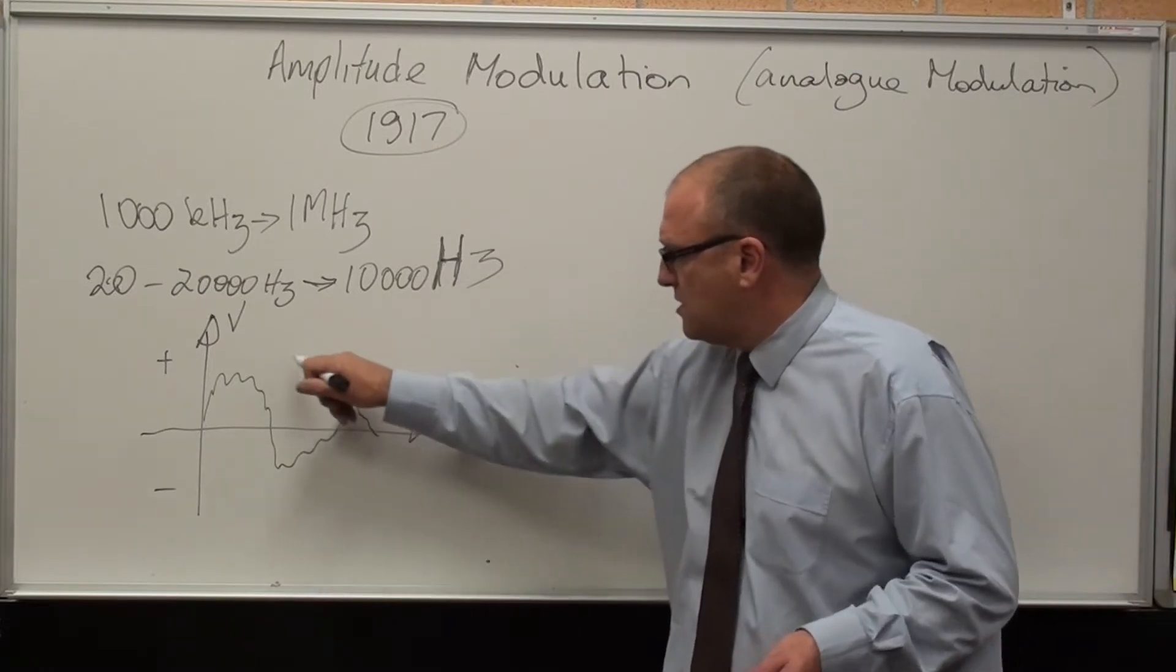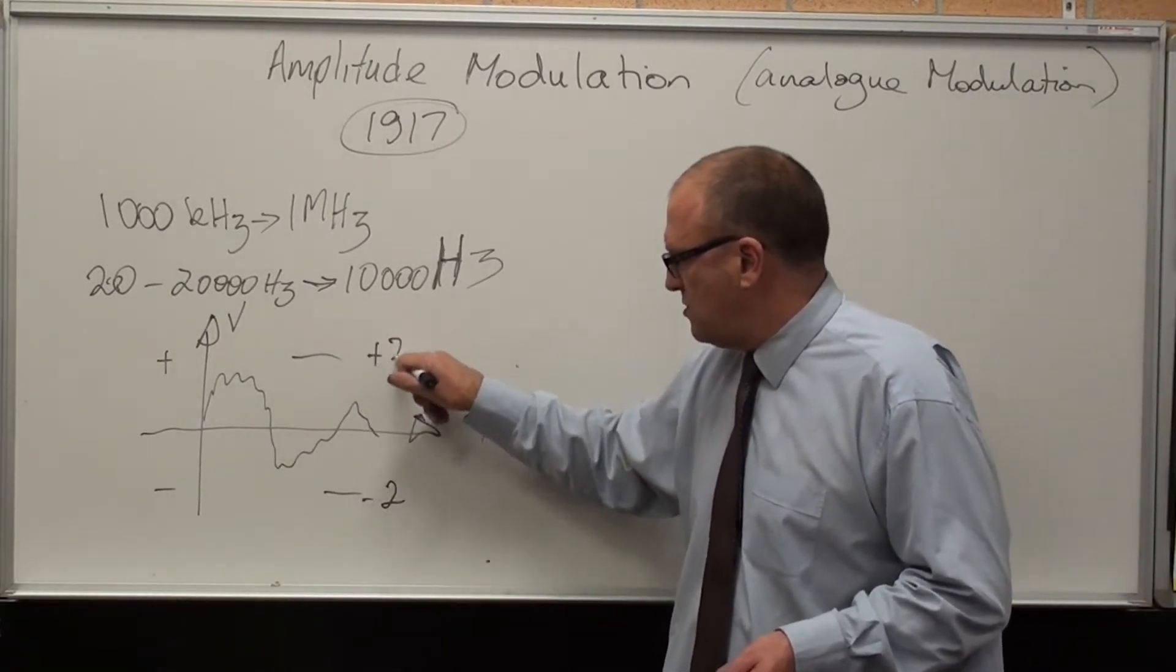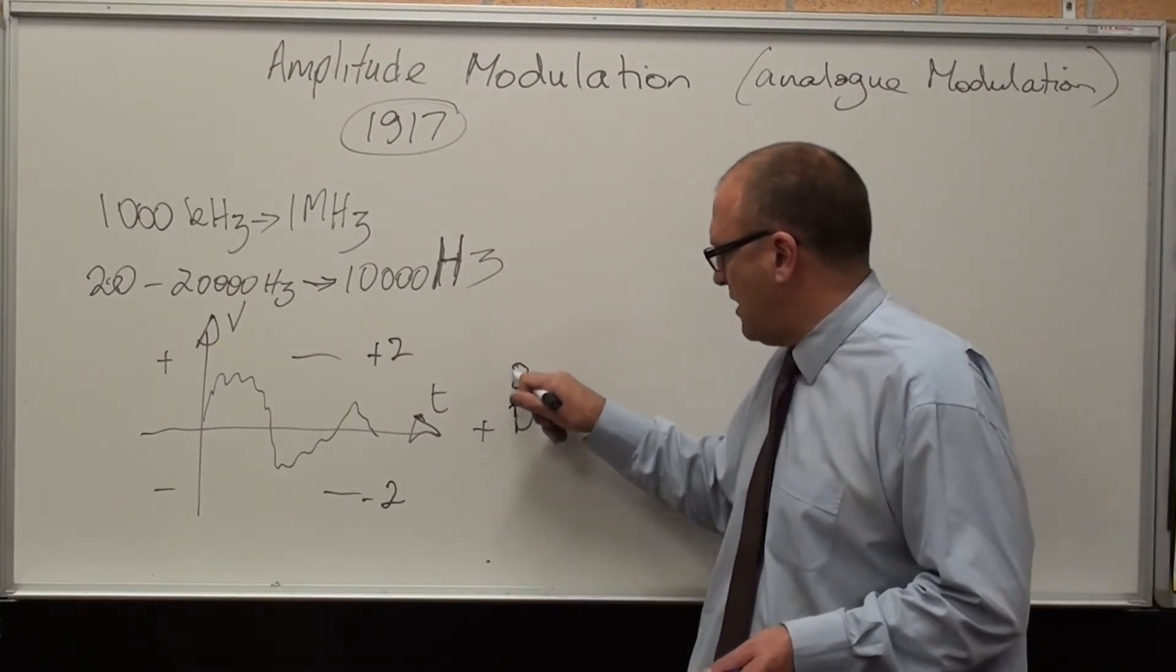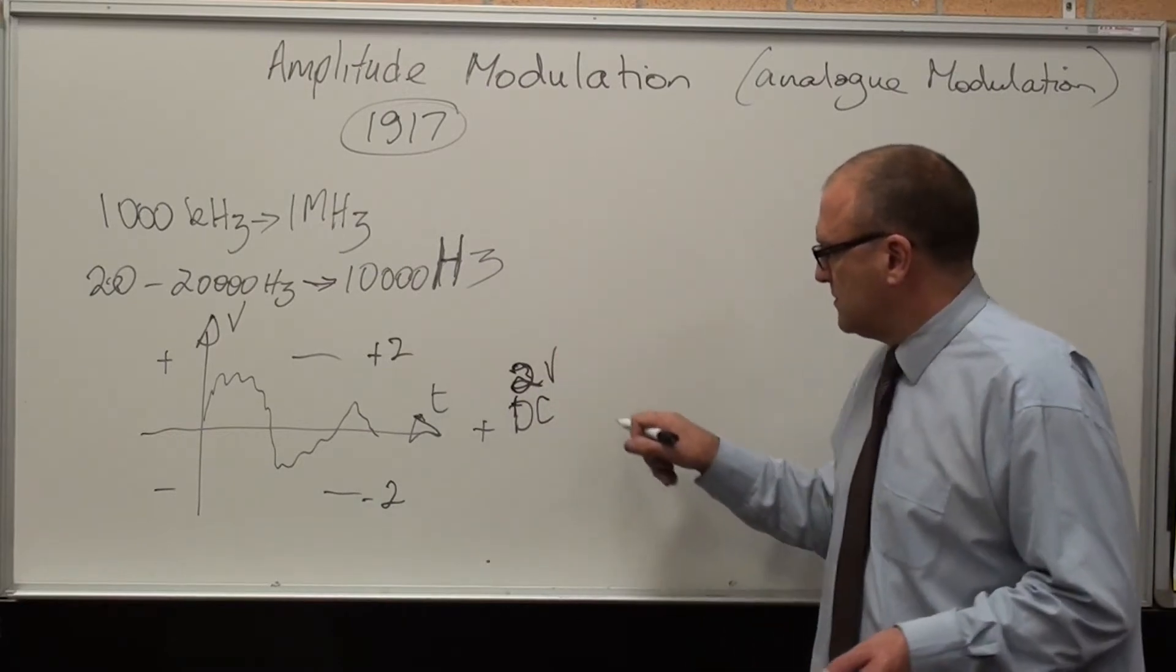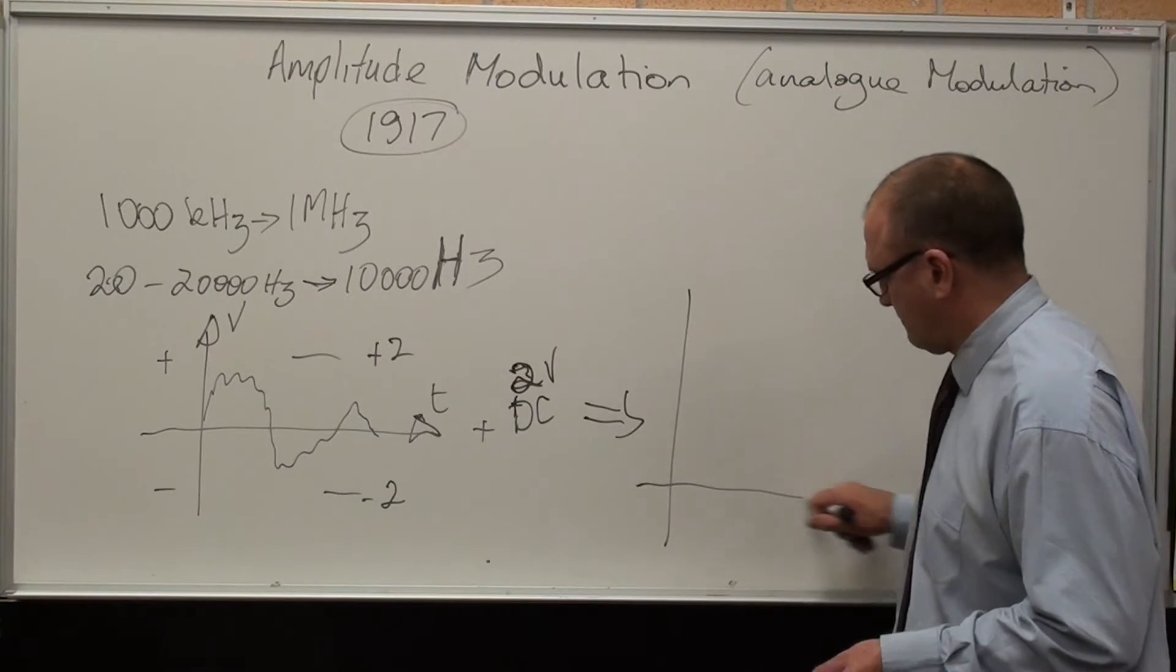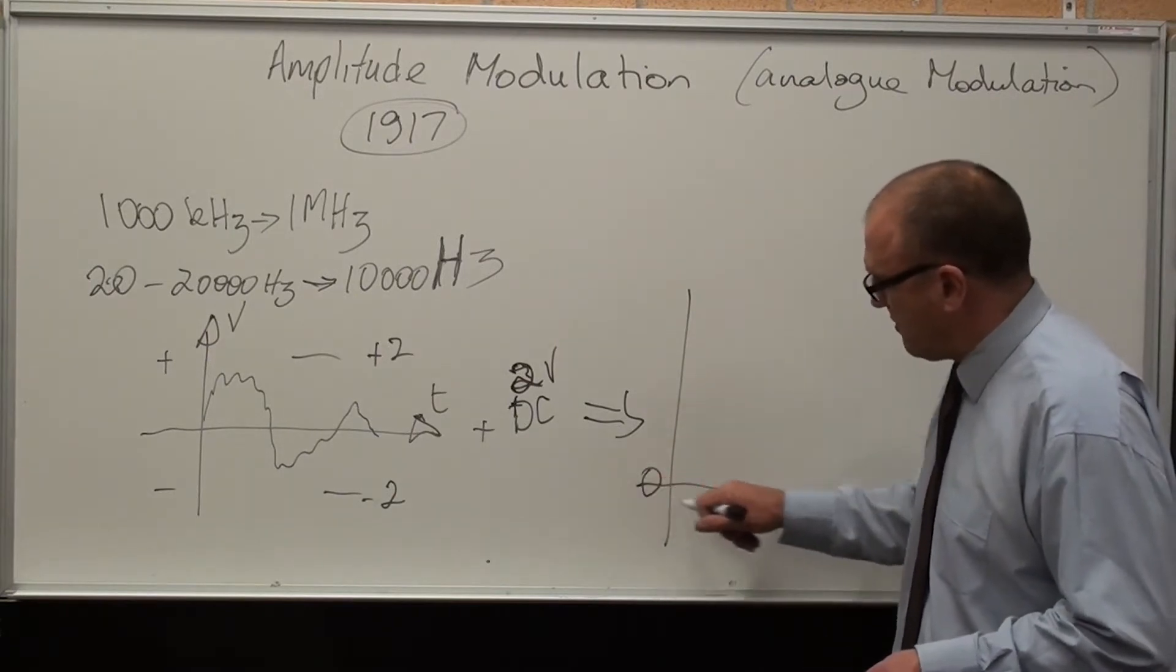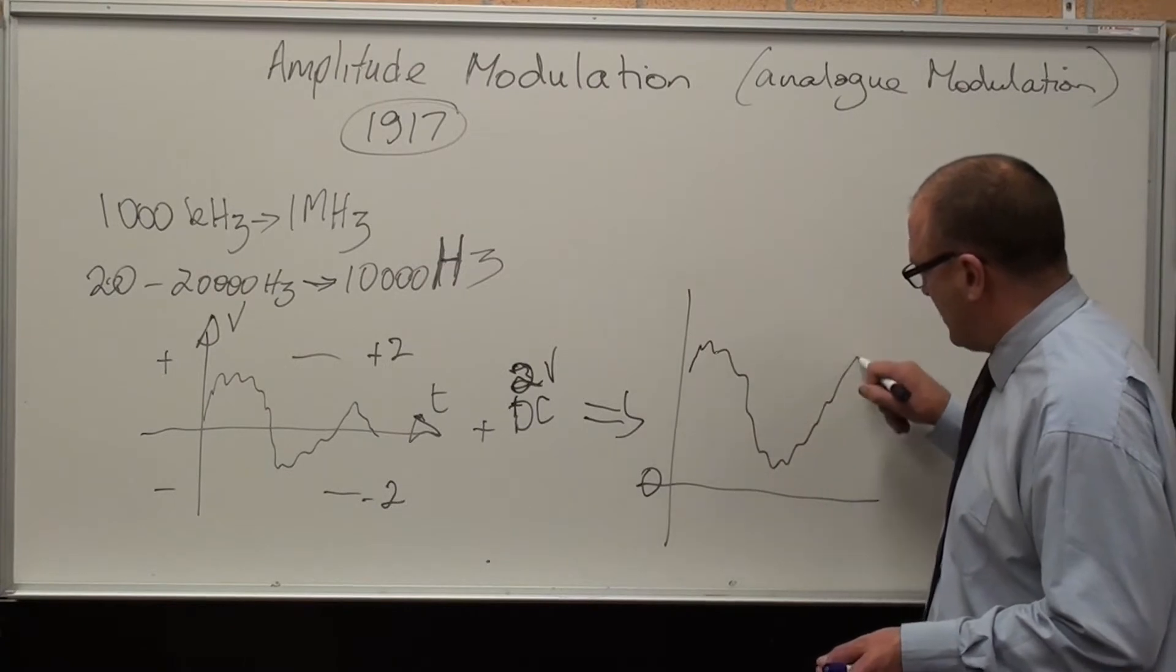I'm going to say that's minus 2 to plus 2. So let's add 2 volts DC. That will give us now, there's zero. That wave now has just shifted up so it always stays positive.